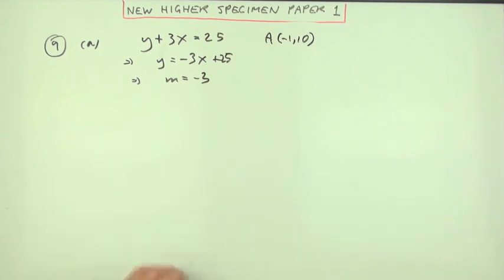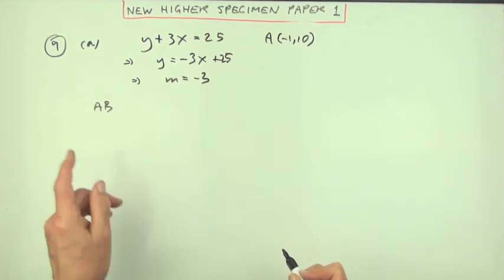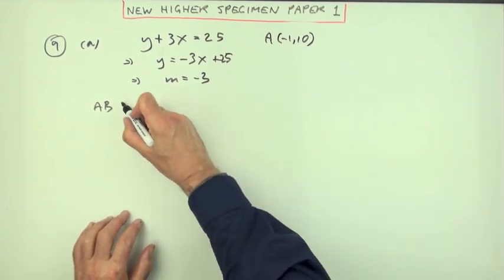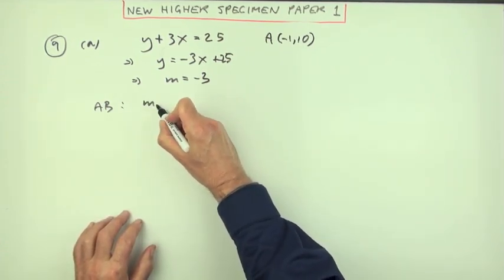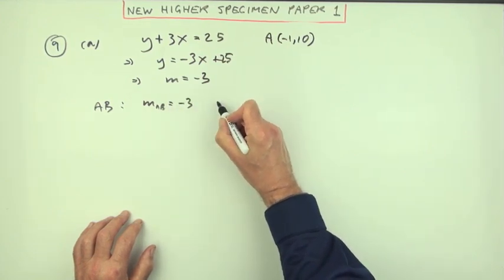So you can extract the gradient being the coefficient of x, so you get m equals negative 3. That means that in the line AB, the gradient is also negative 3. The gradient of AB will be equal to that.